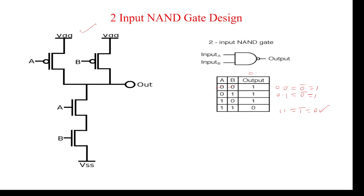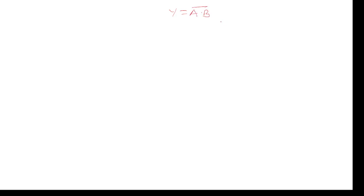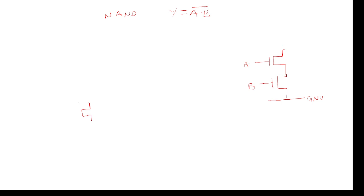How to draw the NAND gate internal circuit? I will explain the rules. Y = A·B is the output for the NAND gate. The rule is: if A and B are multiplied (AND), the pull-down network should be in series. If it is A plus B (OR), the pull-down network should be in parallel. For NAND, since it is A·B, the pull-down network should be in series, using NMOS transistors.